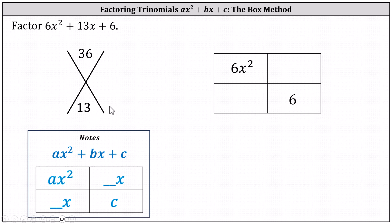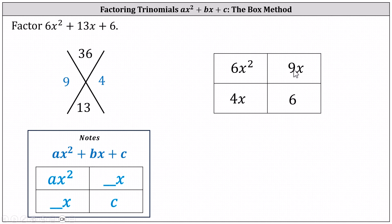We now need to determine the factors of positive 36 that add to 13, which would be 9 and 4. 9 times 4 equals 36, and 9 plus 4 is positive 13. Now in the box for 13x, we use 4x and 9x. Again, it doesn't matter where we place the 4x and 9x in this other diagonal.